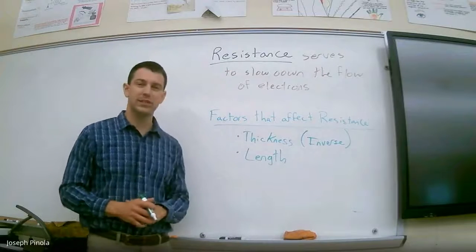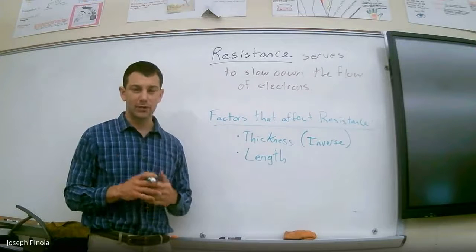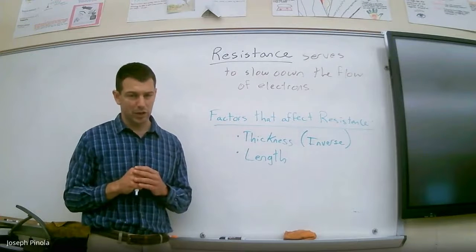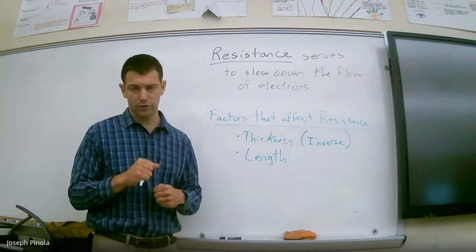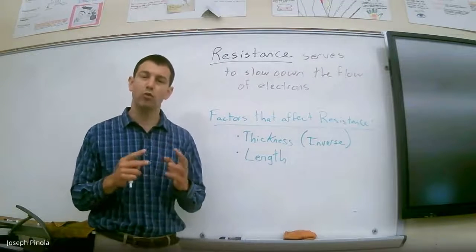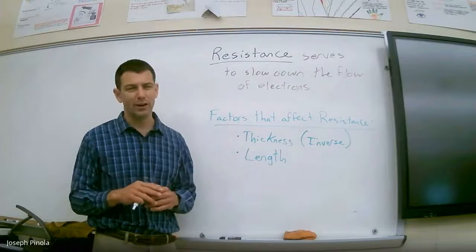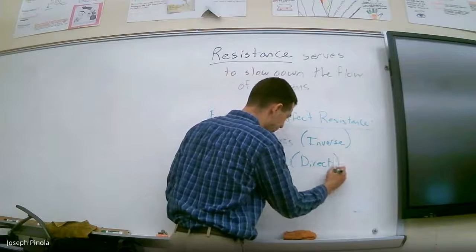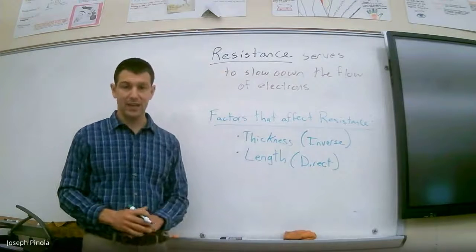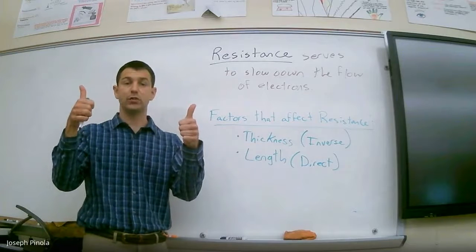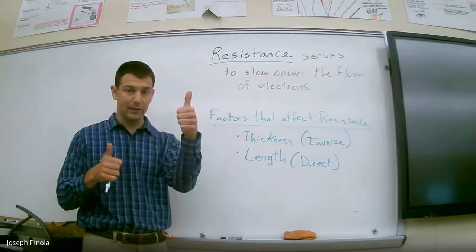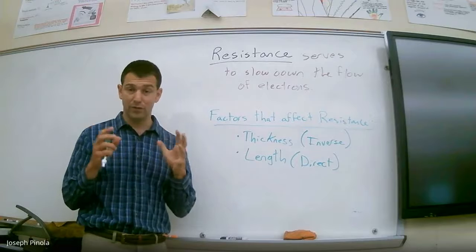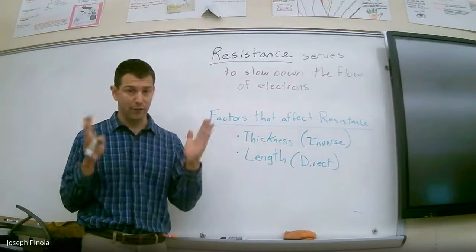The second factor that affects the resistance of a wire is length. Have you ever seen someone try to drink using a crazy straw that wraps around their head? If you have a straw that's very long, it will definitely cause you to take much longer to drink. The same thing is true with wires — if a wire is very long, it will be very hard for the electric current to flow through it. Therefore, length has a direct relationship with resistance: as the length of the wire goes up, the resistance goes up as well. If you wanted to create a wire with very low resistance, that wire ought to be very short.